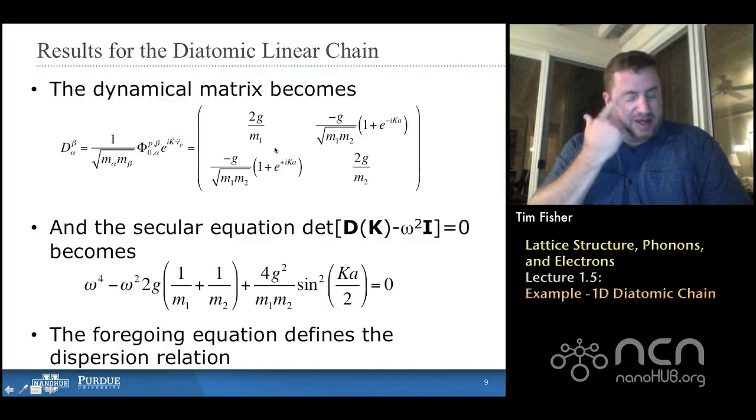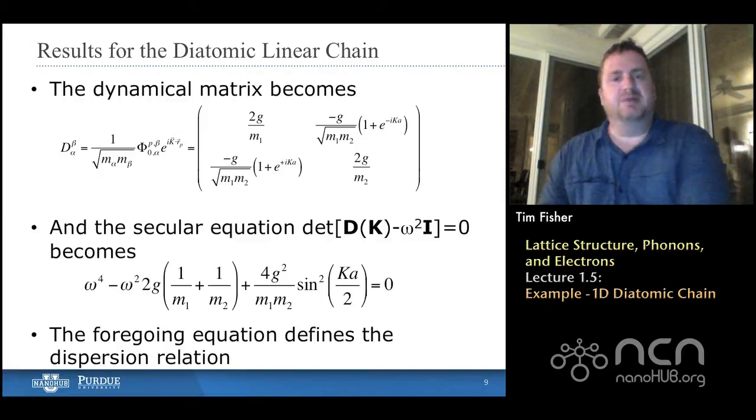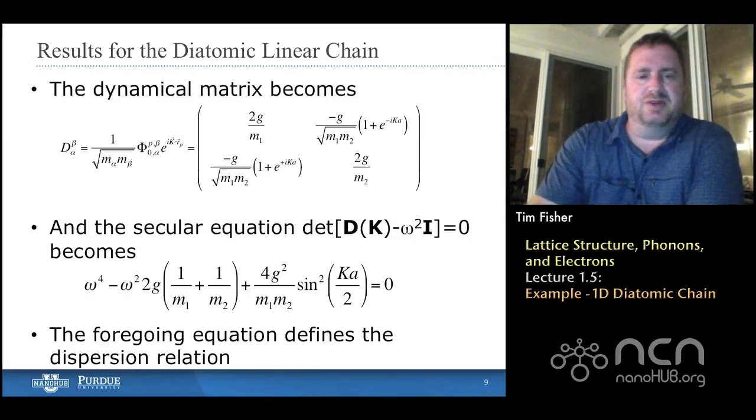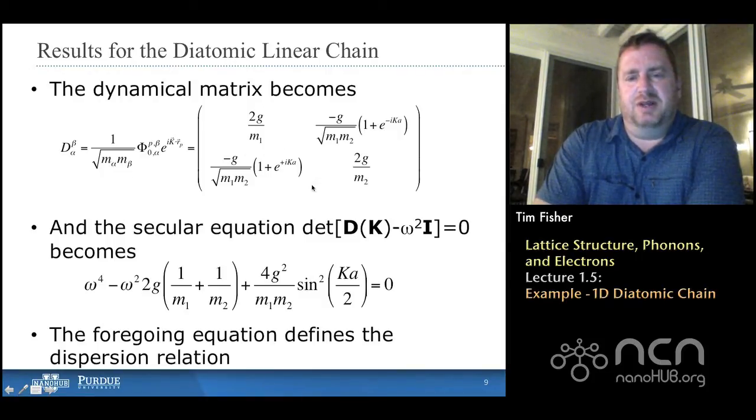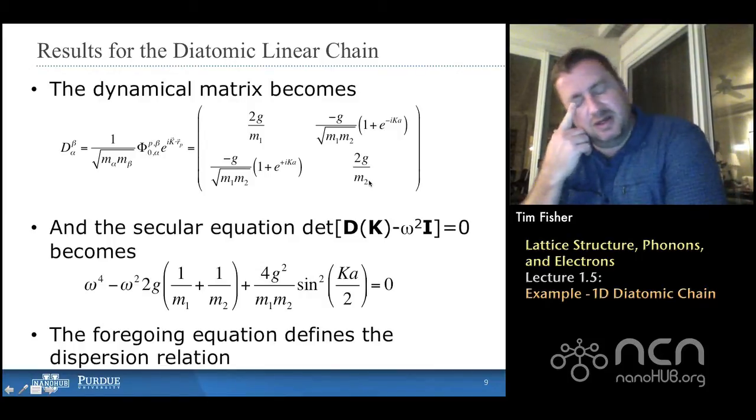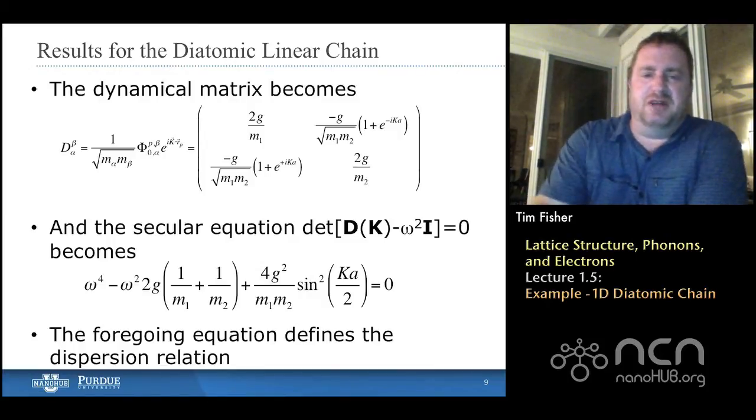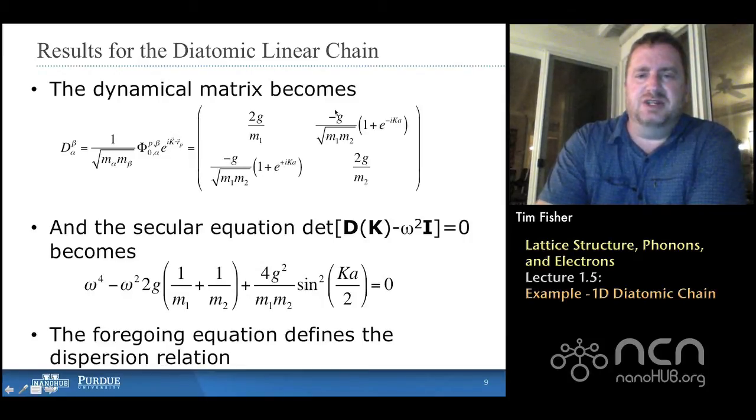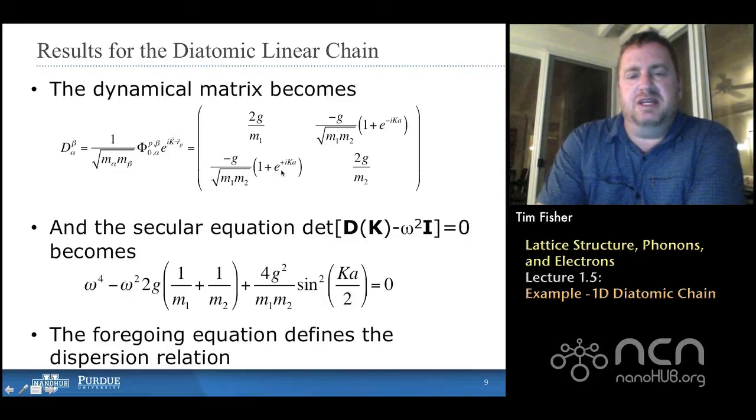So, now, we can go back, and we can substitute all of these values into our dynamical matrix, which we defined earlier. You'll notice that the diagonal terms have that 2G. And so, the diagonal terms correspond to alpha equals beta, so those are the same masses. M1 in the 1,1 location, and M2 in the 2,2 location of the matrix. The off-diagonal terms have these minus Gs, as we had discussed before, but they also have, again, a couple of terms here.